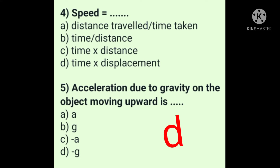If the object is moving upward, we take g as negative. Acceleration due to gravity is taken as minus g because when we throw an object upward, gravitational pull acts on it trying to pull it towards the centre of the earth, while the object is moving upward — that's why g is taken as negative.